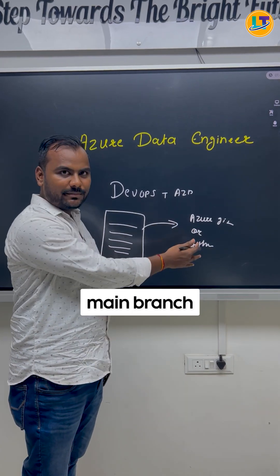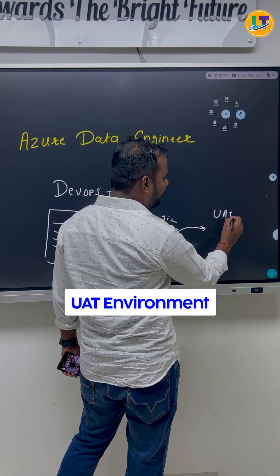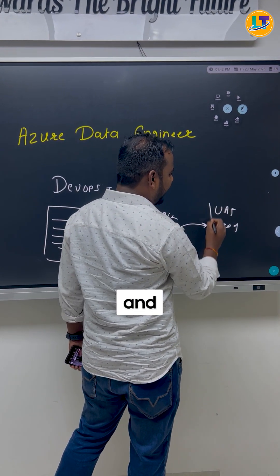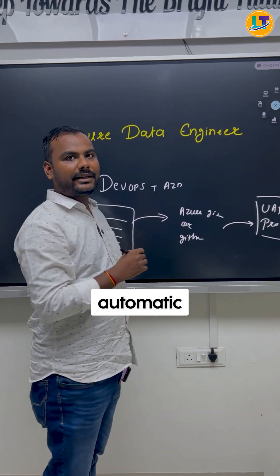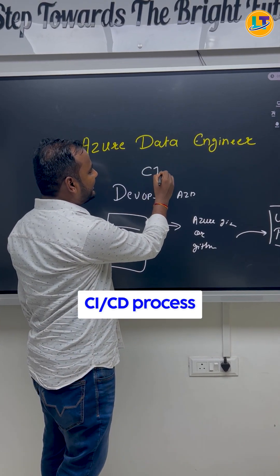As soon as you merge to the main branch, you want this code to be deployed automatically to the UAT environment, which is the testing environment, or production environment. This process should be automatic, and this is possible with the help of the CI/CD process.